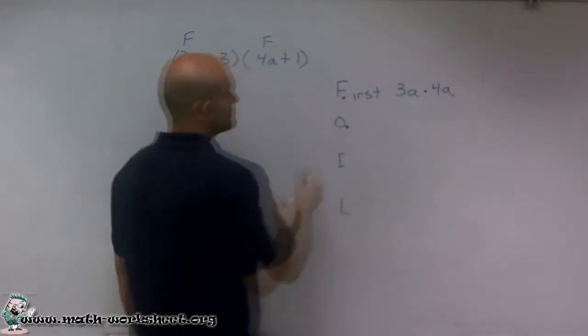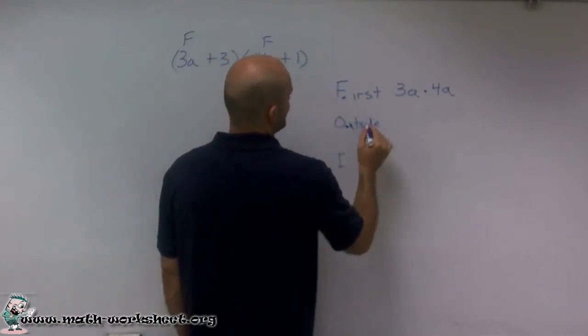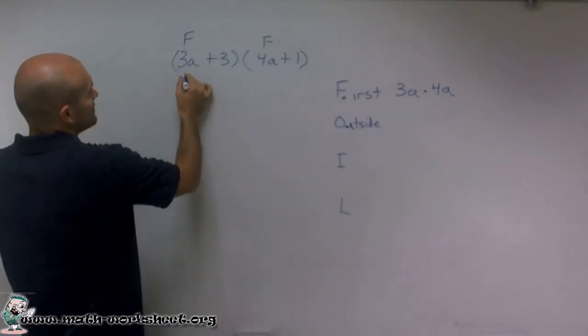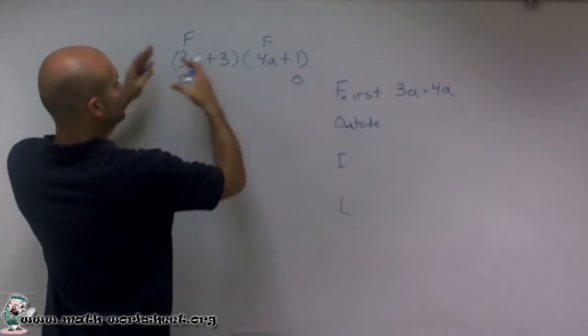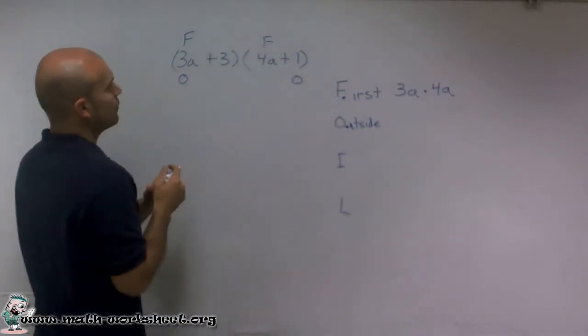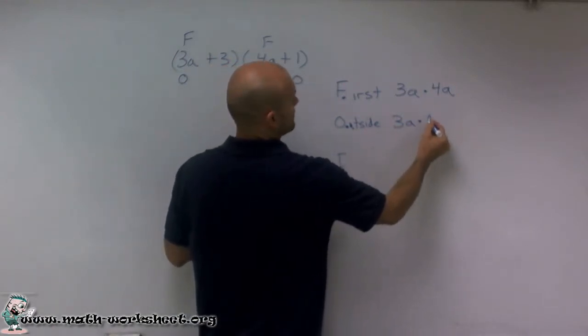Then the next one is O, which means the outer, or I just like to say the outside terms. So the outer terms, if you look at this now as a whole, the outside terms are going to be 3a and 1. So I'm going to multiply those two numbers, which will be 3a times 1.